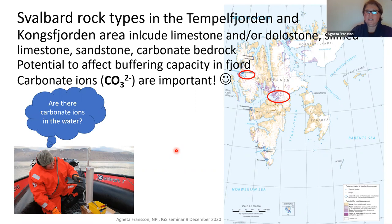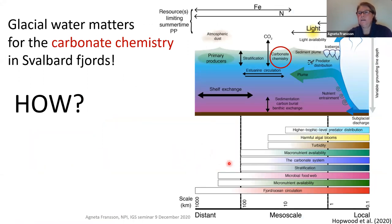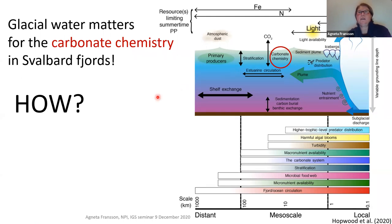Carbonate ions are important, and I will show that glacier water matters for the carbonate chemistry in Svalbard fjords. This figure from Hockwasser and colleagues in 2020 shows different processes in the fjord that affect carbonate chemistry. I will go through these processes and see how glacier water matters.